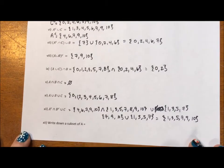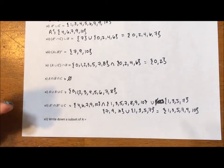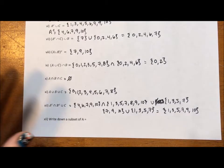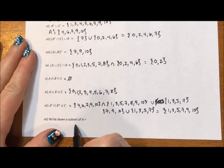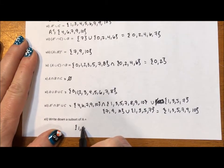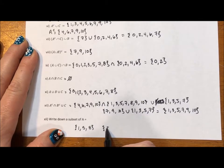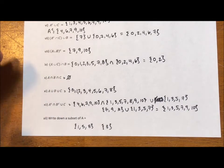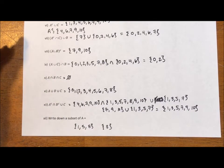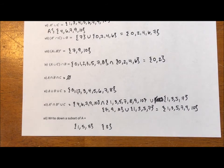The last question is, write down a subset of A. There's so many. I'm not going to write them all. I have a couple of videos on subsets, and you can just see how many I wrote down for a set with five elements, and A has six, so it's going to be even more ridiculous. I could write down 1, 5, 8. I could write down 3. I could write down anything, really. Any combination of the elements in A will be a subset. I hope you've enjoyed this video. Please subscribe to my YouTube channel, like my Facebook page, and I'll see you on the next video. Thanks.